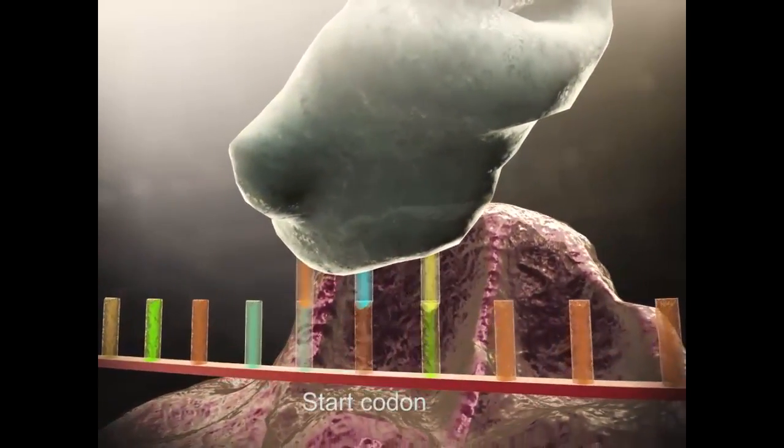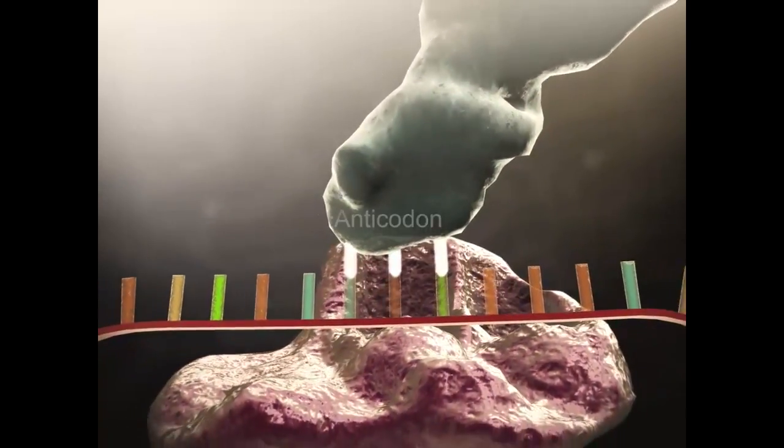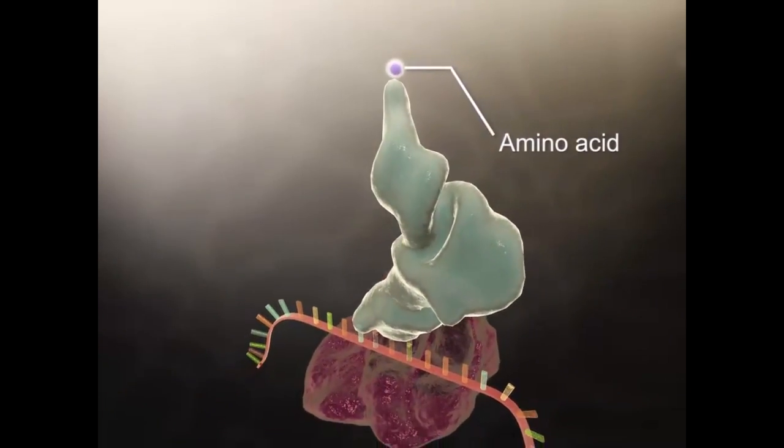tRNA recognizes the mRNA codon through its anticodon, which has a sequence complementary to the mRNA codon. It is the tRNA molecules that carry the amino acid building blocks of the protein.